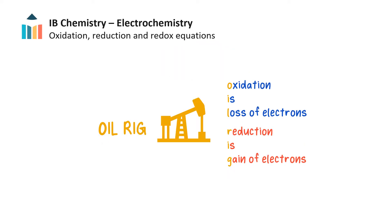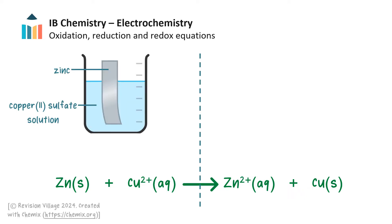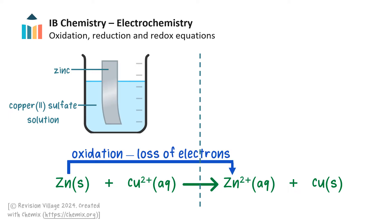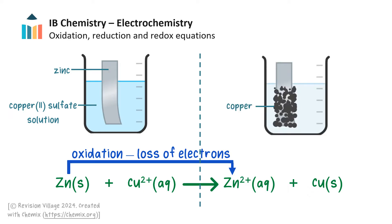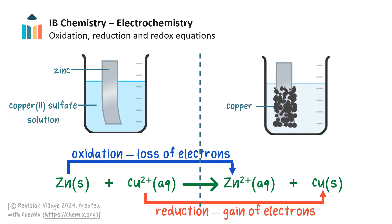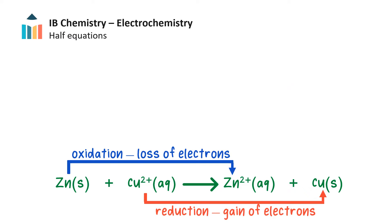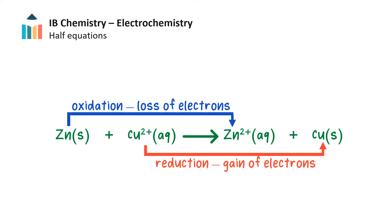We can use the handy acronym OIL RIG to remember that oxidation is the loss of electrons and reduction is the gain of electrons. Here is an example of a redox reaction: zinc metal is placed in a solution containing copper(2+) ions. During the reaction, zinc loses two electrons and forms the zinc(2+) ion in solution — zinc is oxidized. As the reaction proceeds, the blue color of the copper(2+) solution fades and copper is deposited as a dark solid on the remaining zinc metal. The electrons lost by zinc are gained by the copper(2+) ions — copper is reduced to its elemental form.